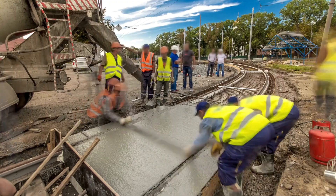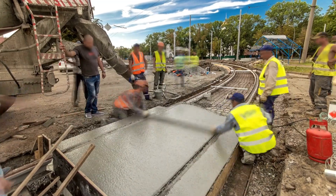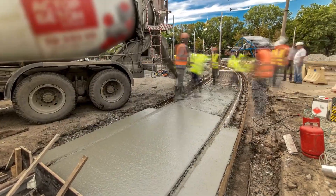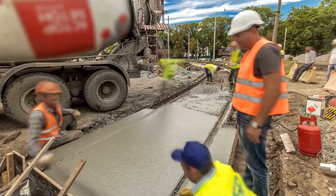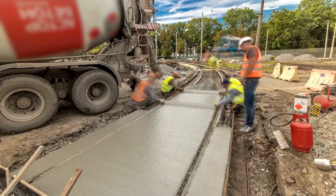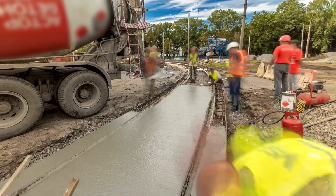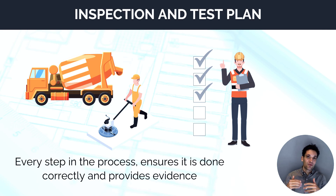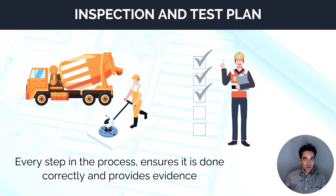It'll check if the concrete mix is correct, if the placement method is correct, if the formwork is being stripped after a certain amount of time. All these things are documented in the inspection and test plan. The ITP contains every single step in this process, ensures they're each done correctly, and provides evidence and records that the works have been completed correctly.